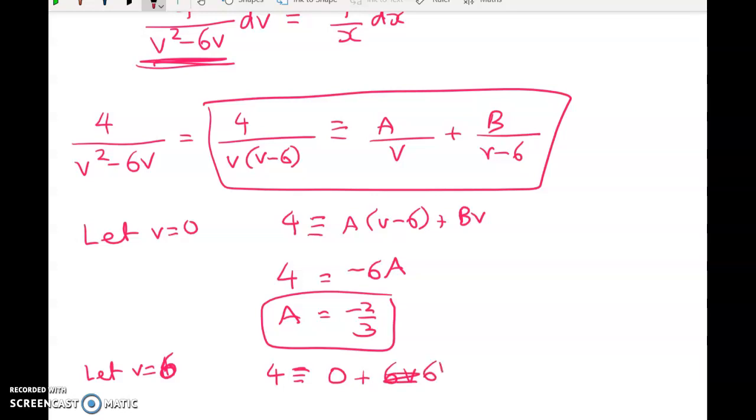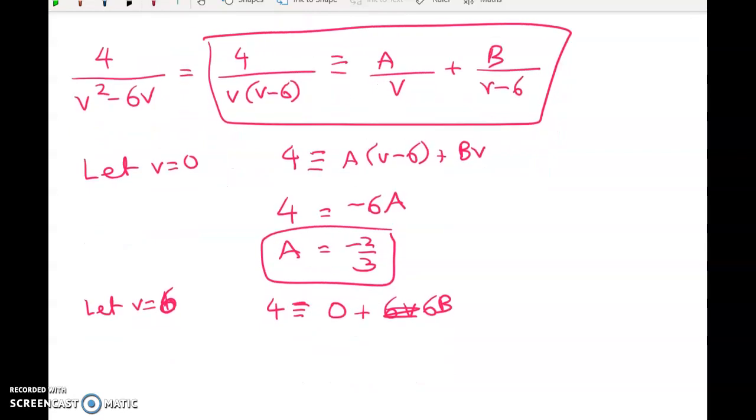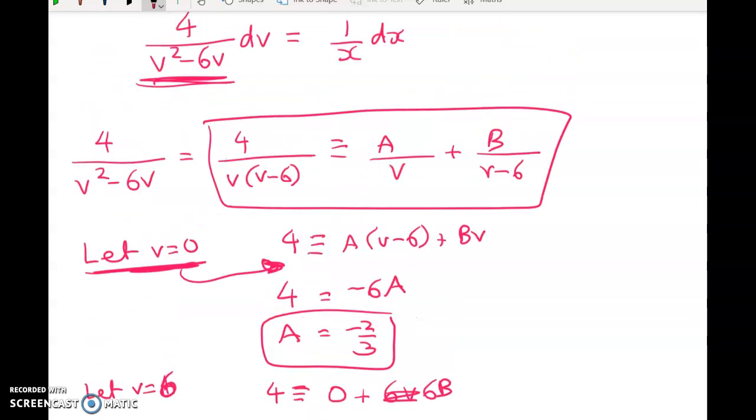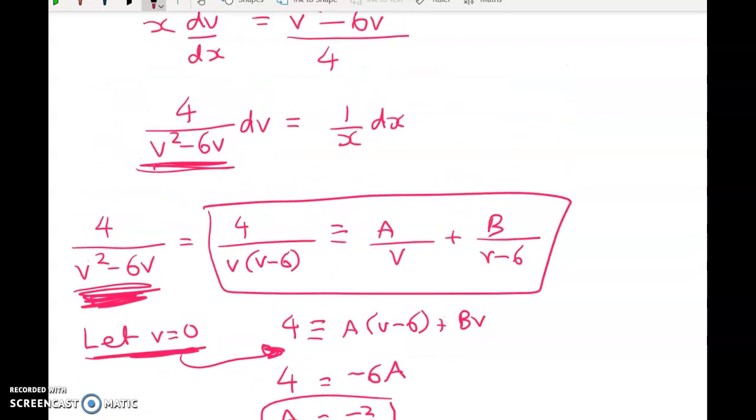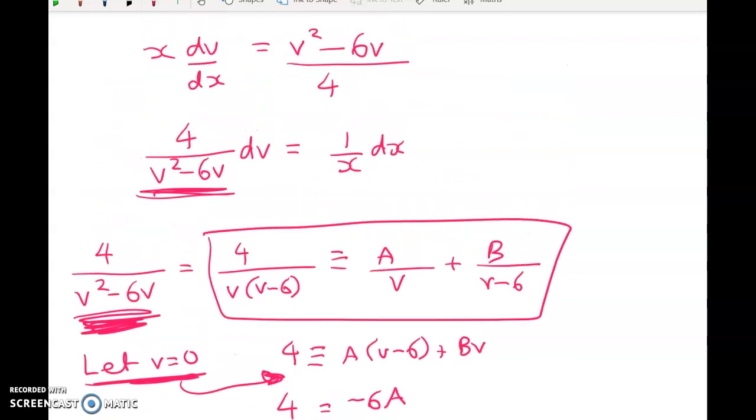So we get 4 is equal to 6B. Okay, so I'm substituting particular values of V into here to find these constants. So B is equal to 2 thirds. So that means that I can go back up to here now, and I can rewrite this integral.